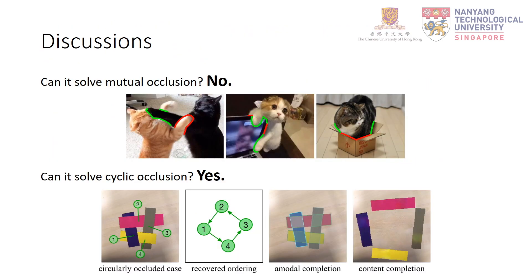Two discussion points: First, can it solve mutual occlusions? No — for mutual occlusions, the ordering graph in our method cannot be defined, and fine-grained boundary-level deocclusion would be required, leaving an open question. Second, can it solve cyclic occlusions? Yes — our ordering recovery method recovers pairwise ordering rather than sequential ordering, so cyclic occlusion is not a major issue. Thank you for watching.